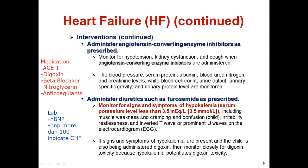The normal serum potassium level is 3.5 to 5.0 mEq/L. If less than 3.5, we call it hypokalemia. If untreated, it leads to dysrhythmia. Signs and symptoms of hypokalemia include muscle weakness, muscle cramping, confusion, irritability, and restlessness. On EKG or ECG, we can see inverted T-waves and also prominent U-waves.